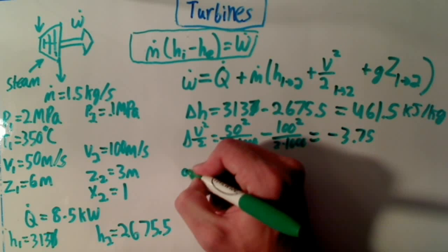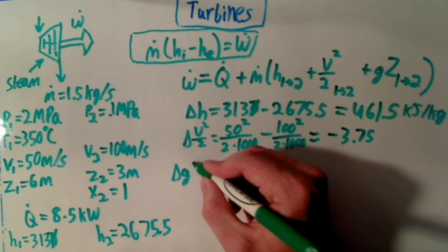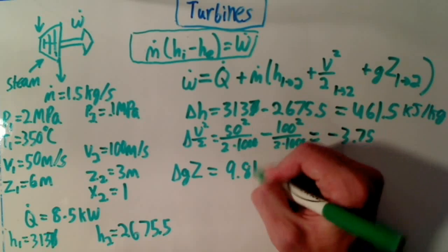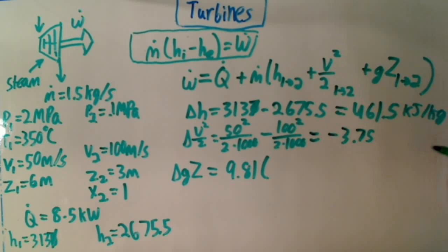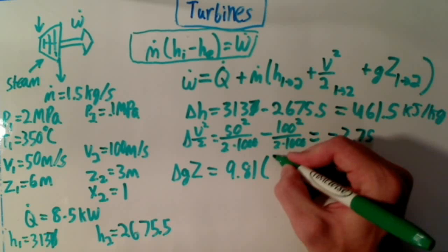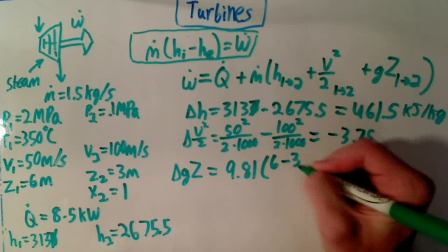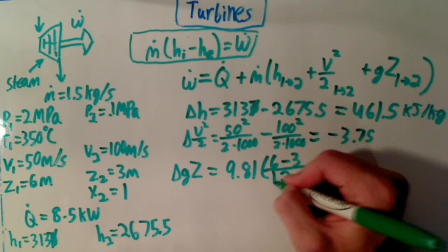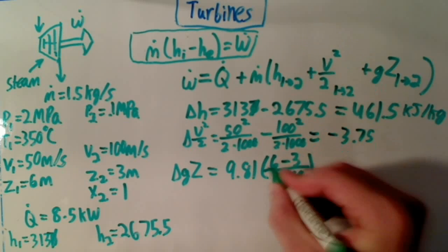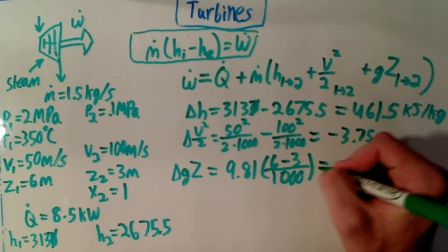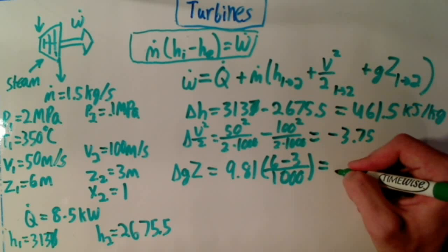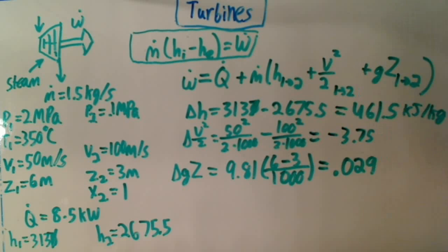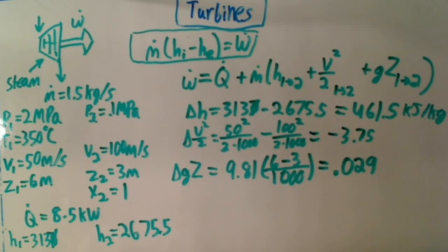And then we have delta GZ, which is 9.81 meters per second squared, times 6 minus 3, all over 1,000. Don't forget we have to convert these to kilojoules too. And that equals positive 0.029 kilojoules per kilogram.